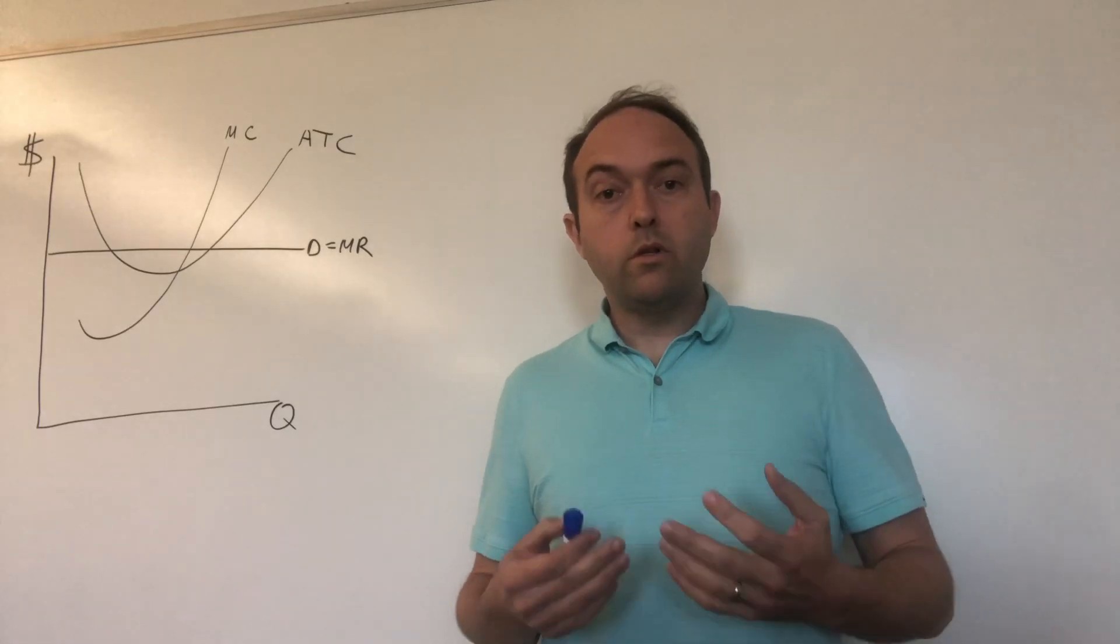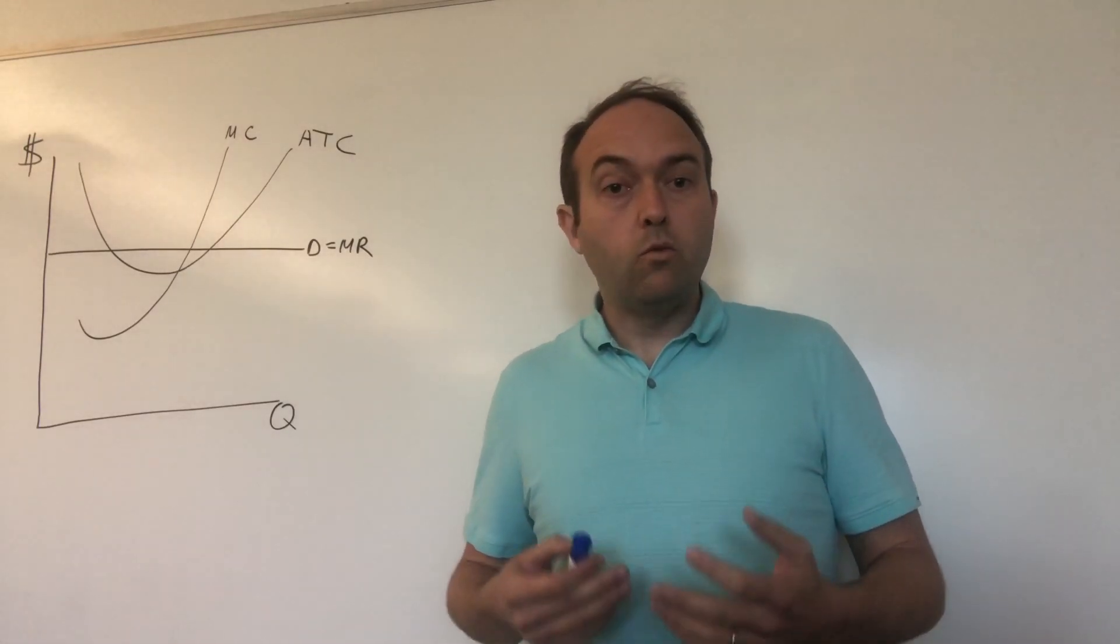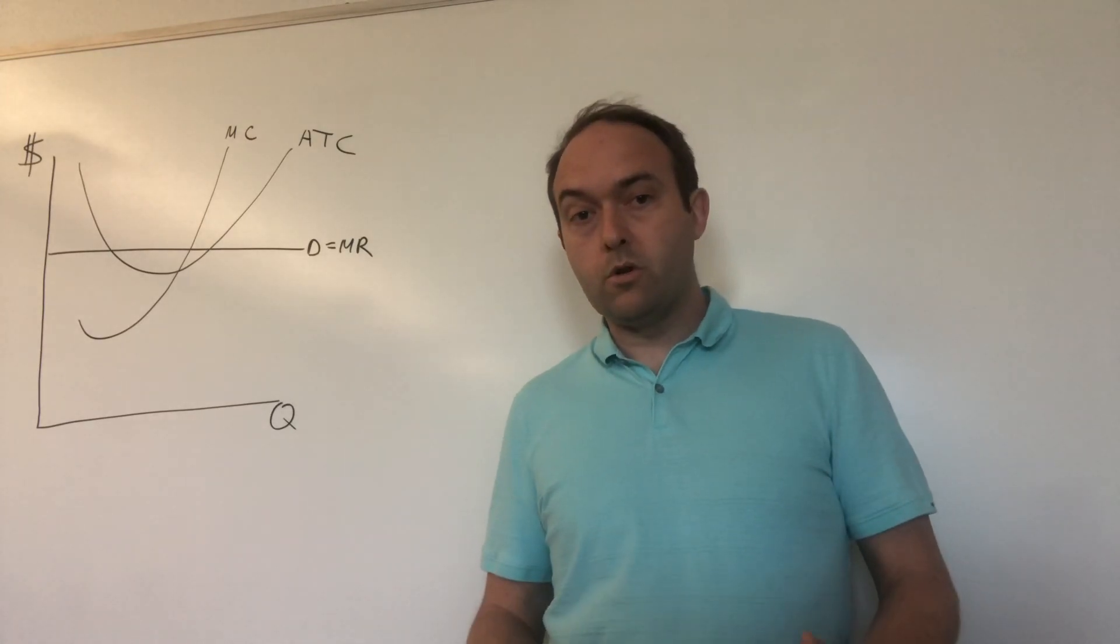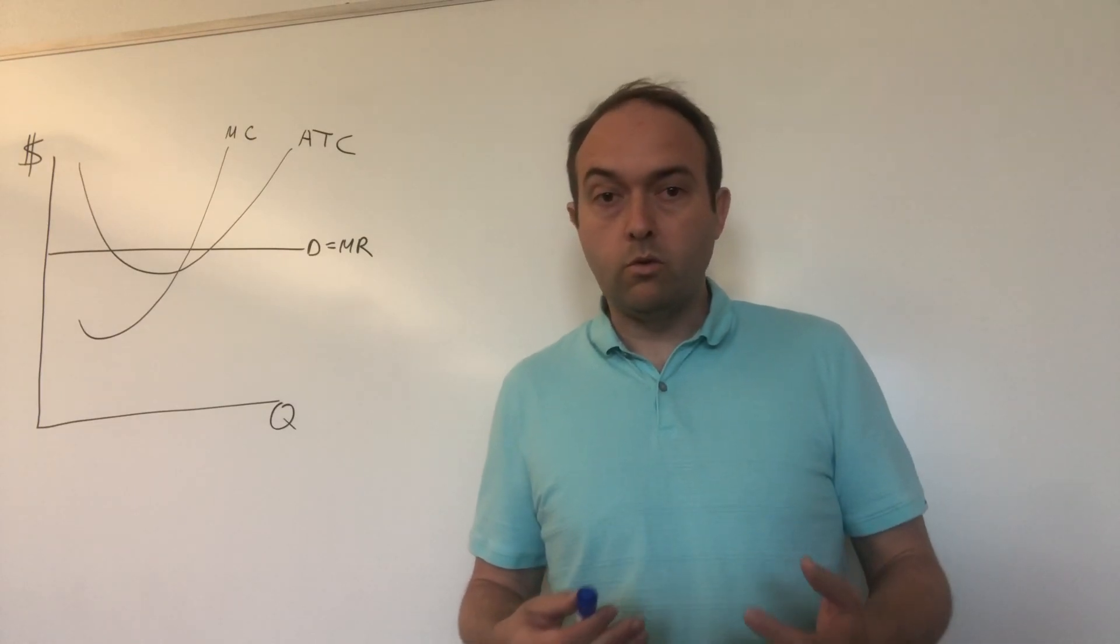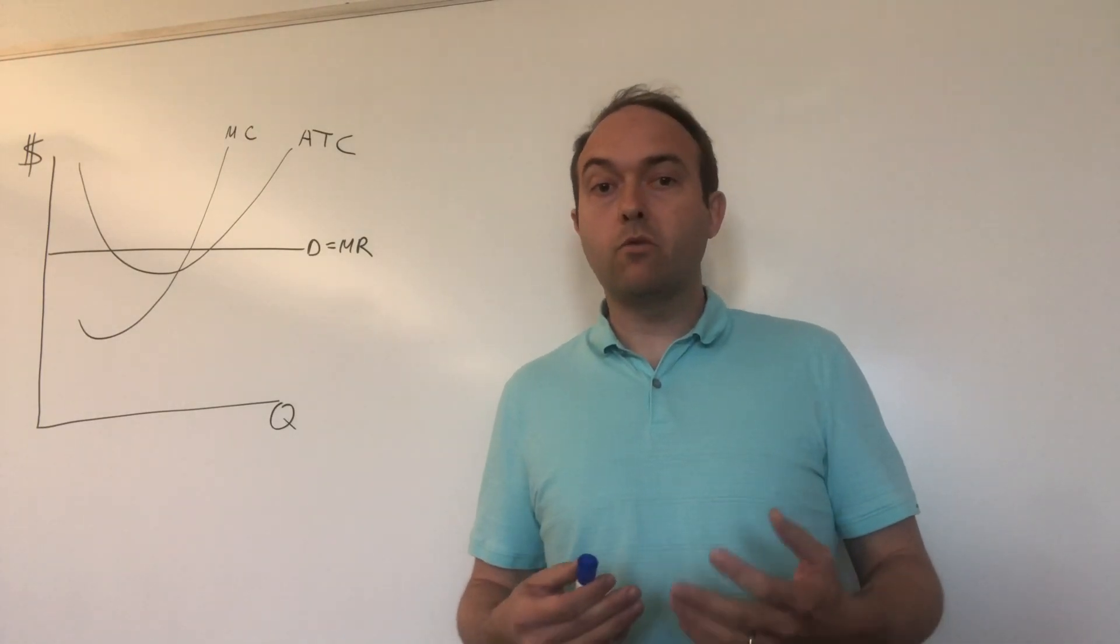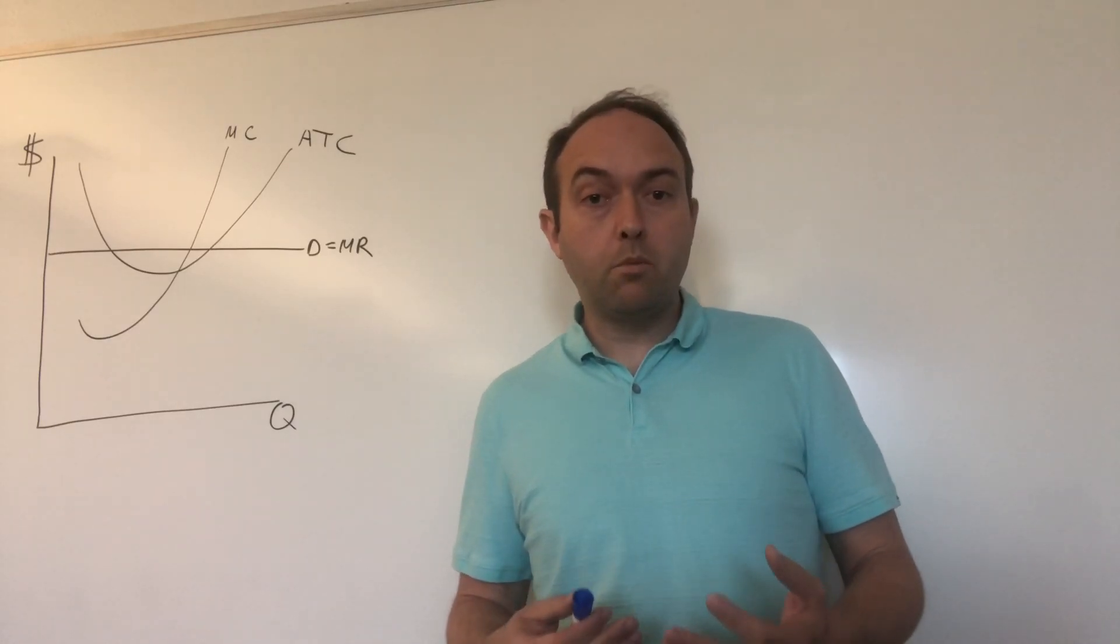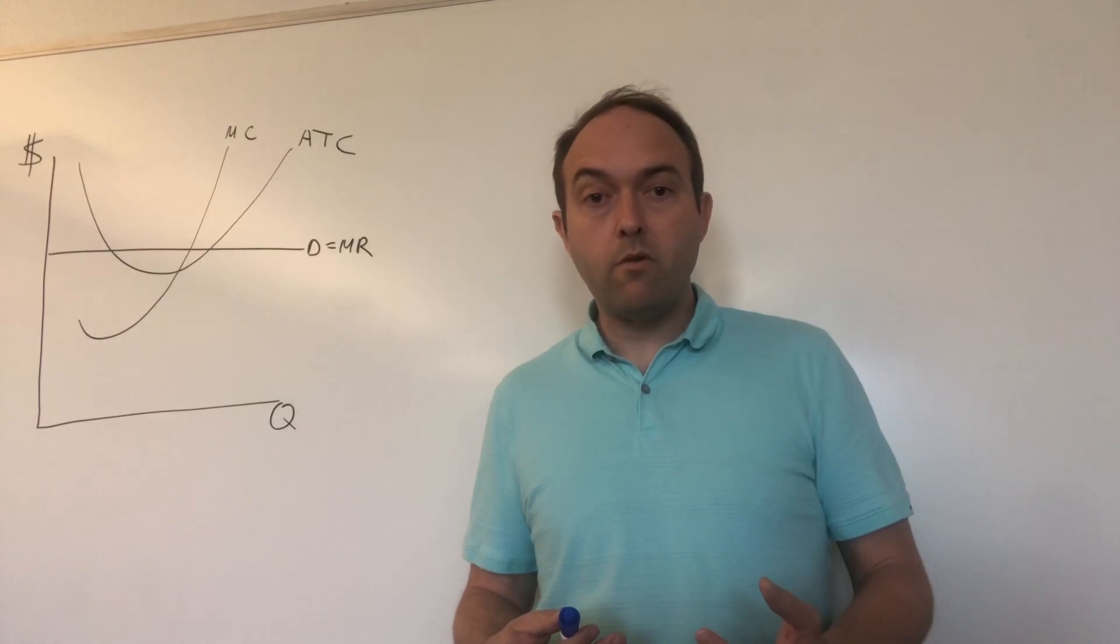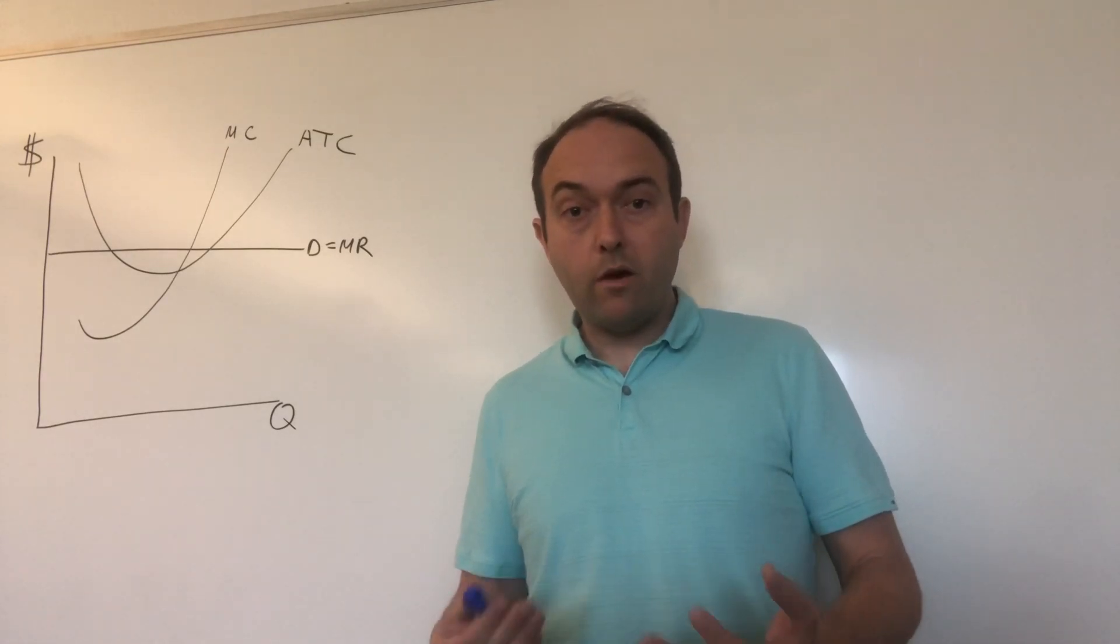So first thing you want to figure out about your perfectly competitive firm is what quantity are they going to produce for their product. Your book presents something called the profit maximization rule, which is a firm can maximize the profit it makes from selling its product if it sets the quantity produced for marginal revenue equals marginal cost.